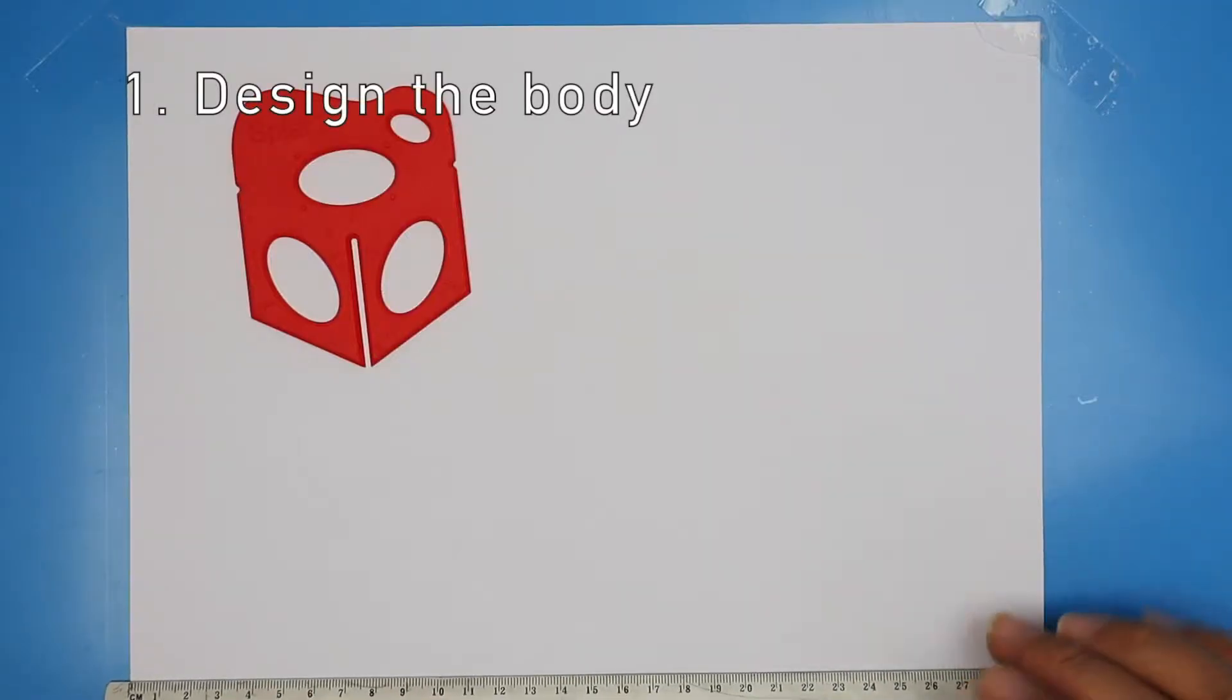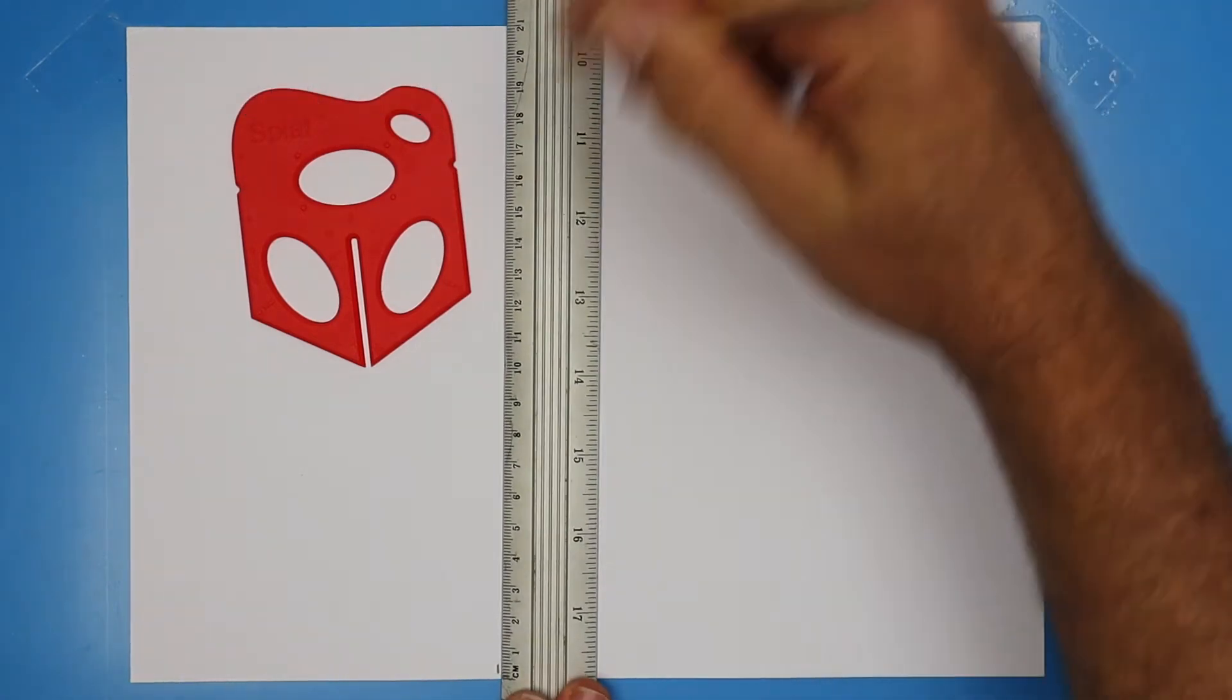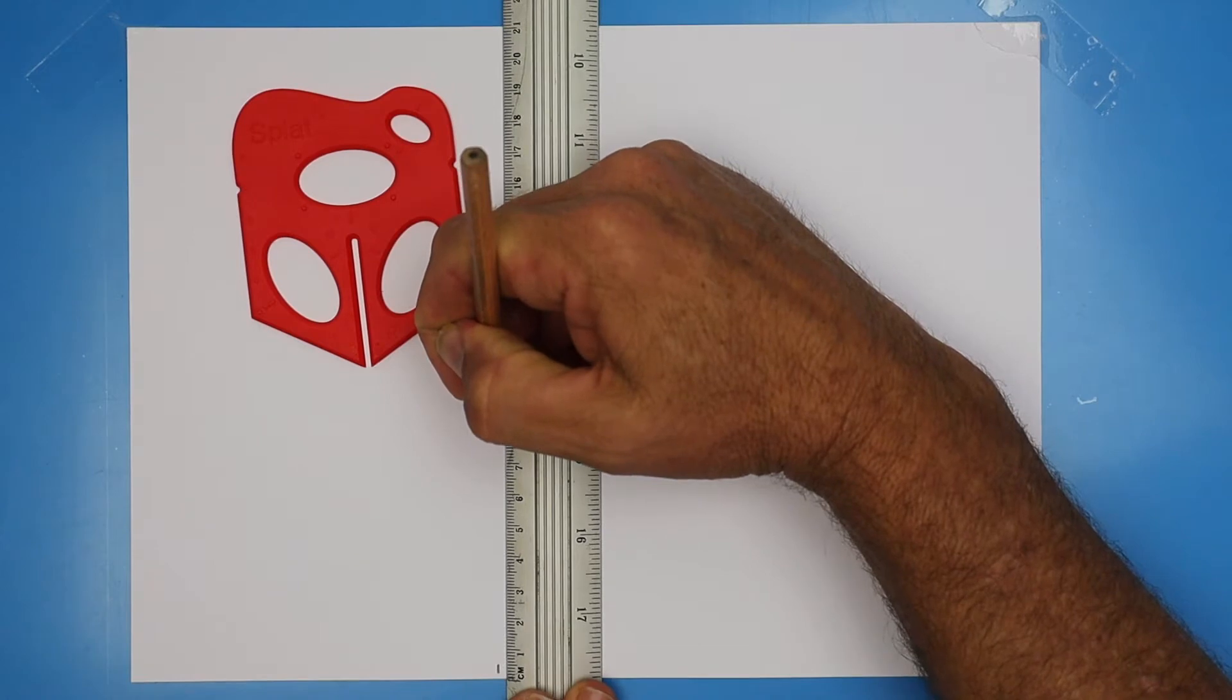To find the starting point, first measure across 12 centimeters and then come up the page 8 centimeters. That's our starting point.